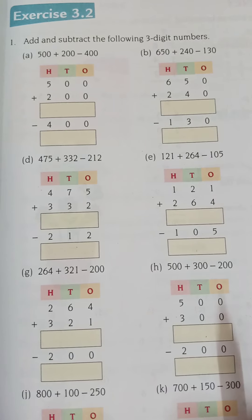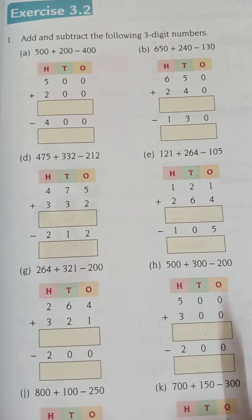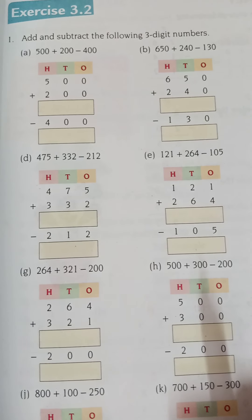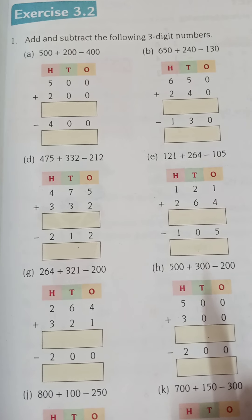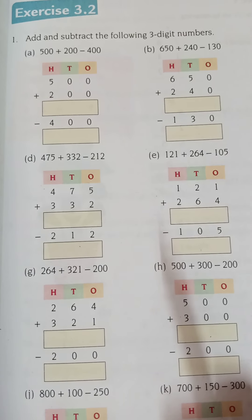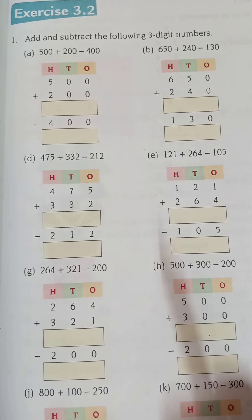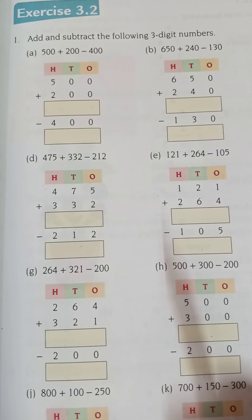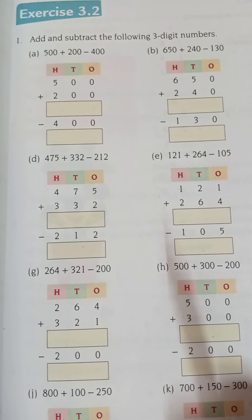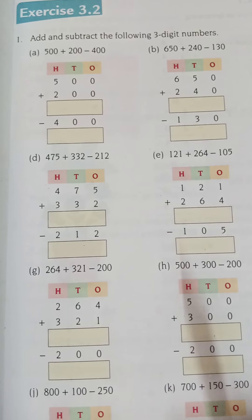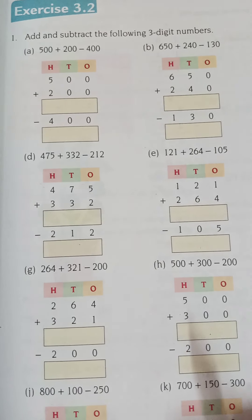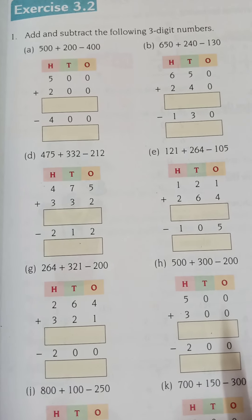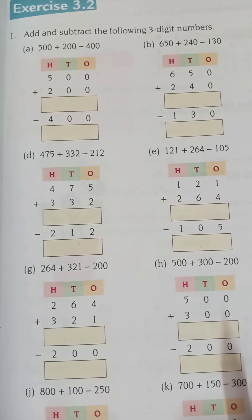Turn the page to page number 47. Exercise 3.2. Read the question given: add and subtract the following three-digit numbers. So you have to first add, then subtract the following three-digit numbers.